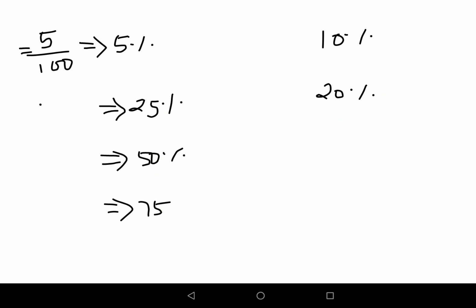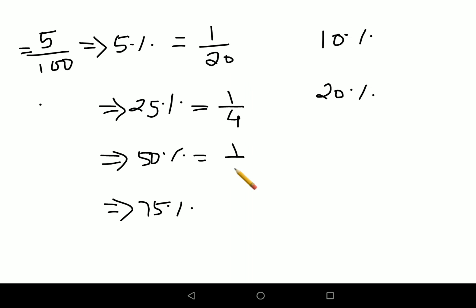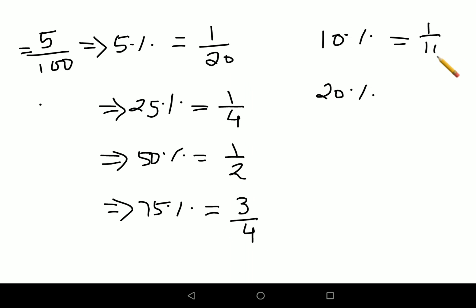5 upon 100 is 1 upon 20. 25 upon 100 is 1 upon 4. 50 percent is 1 upon 2. 75 percent is 3 upon 4. 10 percent is 1 upon 10. 20 percent is 1 upon 5. These are key fraction equivalents you need to remember.